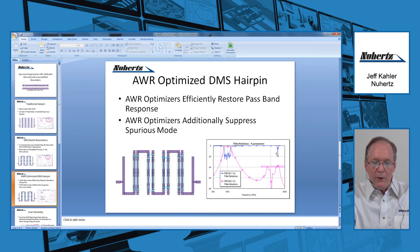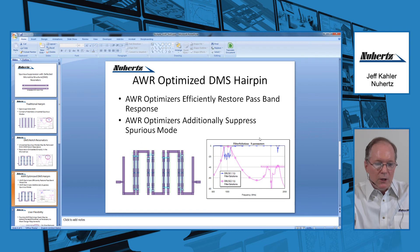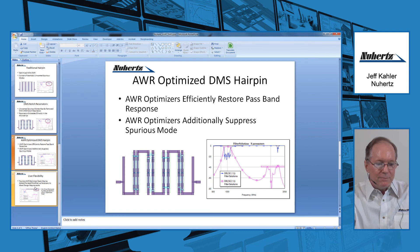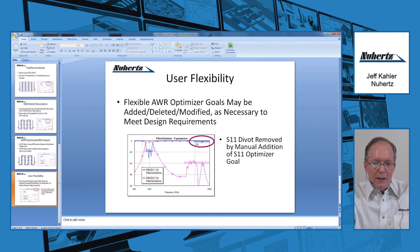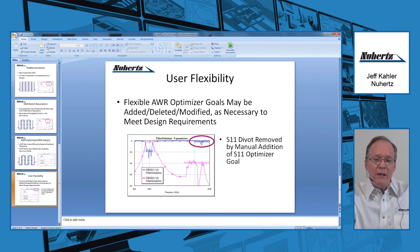In this case, this S11 divot may be a problem depending on your design requirements. If it isn't, leave it alone — you're done. If it is a problem, then Microwave Office is very flexible with user optimization goals. All we need to do is install another optimization goal right here, which was installed by hand — it's very easy to do in Microwave Office. We want to get rid of this divot, or perhaps a higher resonant mode. Install this goal so that S11 will be above, I think, 1 dB. Run the optimizer again, and the divot goes away. We can see our S12 goals still look very nice, but we do see some slight degradation as a result of fixing the S11. There is a tradeoff for everything.